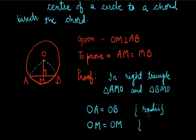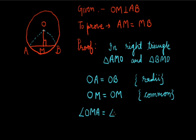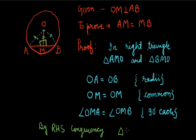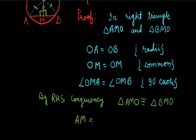OM is common to both triangles. Angle OMA is equal to angle OMB because both are 90 degrees. So by the RHS (Right angle-Hypotenuse-Side) congruency criterion, triangle AMO is congruent to triangle BMO, and hence by CPCT, AM is equal to MB.